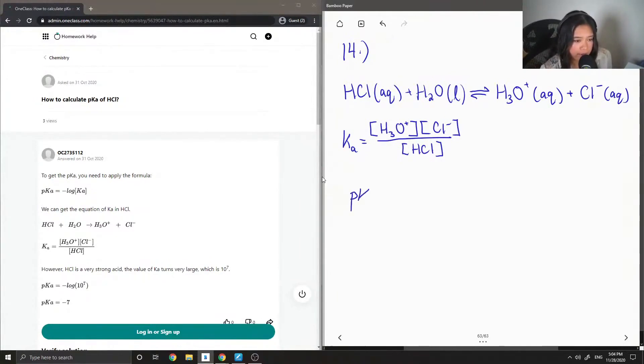in order to calculate pKa, it is just the negative log of our Ka value.